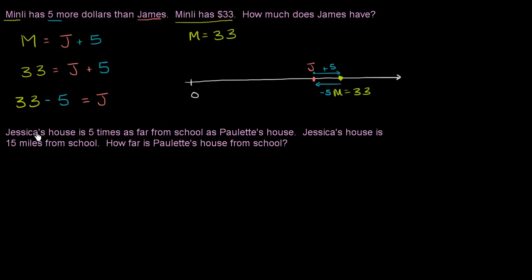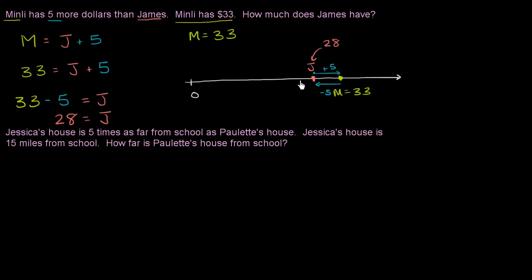So how much money does James have? 33 minus five is 28. So James has $28. And you can see that 28 plus five is 33 — 33 is five more than 28. So this all works out.